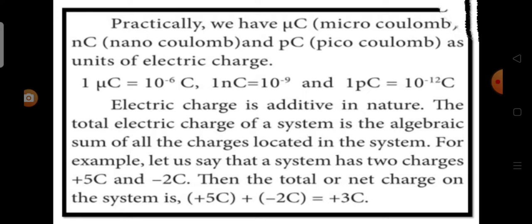Practically, we have micro coulomb, nano coulomb, and pico coulomb as units of electric charge. 1 micro coulomb equal to 10 power minus 6 coulomb, 1 nano coulomb equal to 10 power minus 9, and 1 pico coulomb is 10 power minus 12 coulomb.